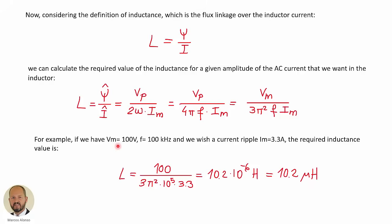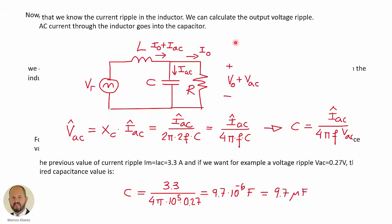For example, if we have a peak rectified voltage of 100 volts, a switching frequency of 100 kilohertz, and we want a peak current ripple of 3.3 amperes, then we only have to substitute and we get a value of inductance of approximately 10 microhenries.